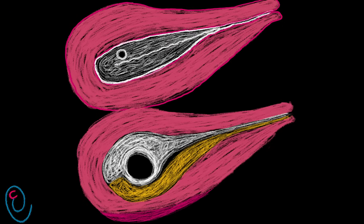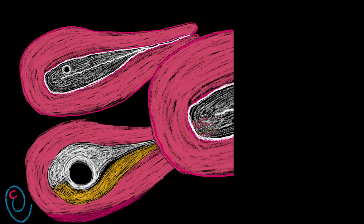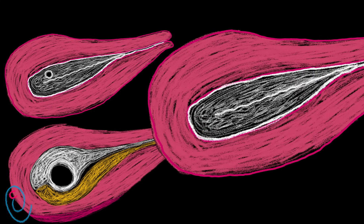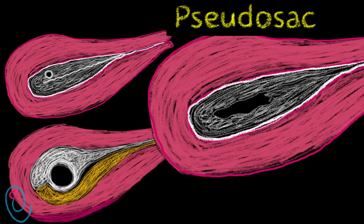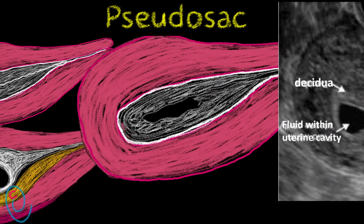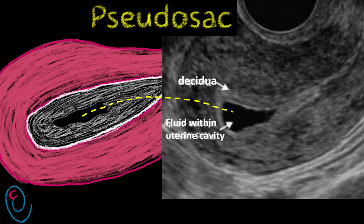The intra-decidual and double-decidual signs are important in differentiating between a true gestational sac and a pseudo-gestational sac. A pseudo-sac is a fluid collection inside the uterine cavity. It looks like an irregular sac, central in location, because it is present inside the uterine cavity, and is surrounded by a single layer of decidua — meaning there is no double-decidual sign.